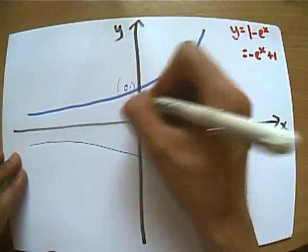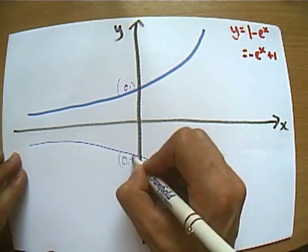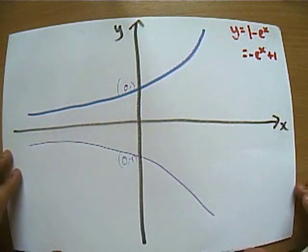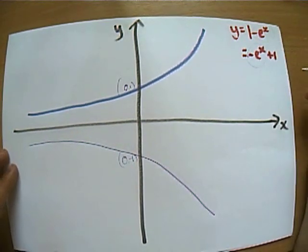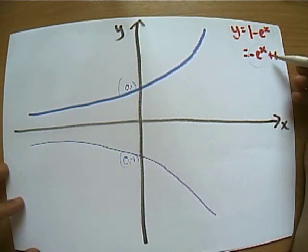It was going through 0, 1 and this graph is now going to go through 0, minus 1. The asymptote isn't going to change, it's never going to touch the x axis. Now we're dealing with the negative e to the x graph and the next thing we need to do is take this graph and add 1 to everything.